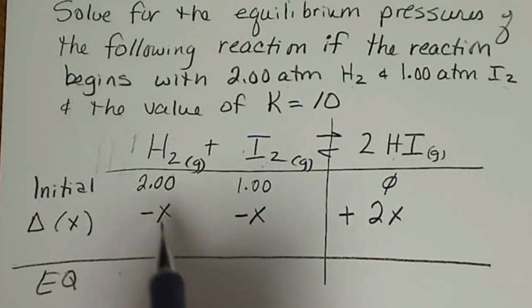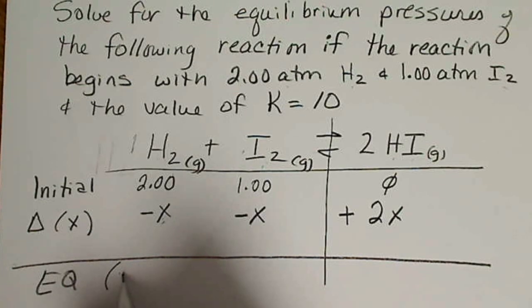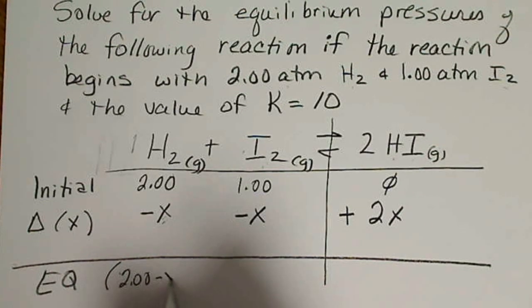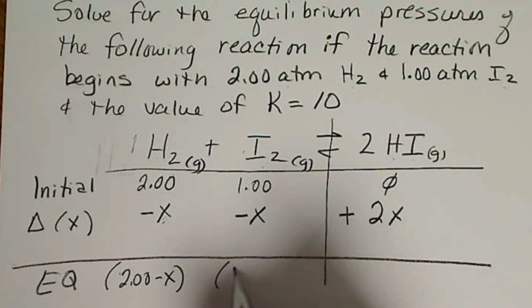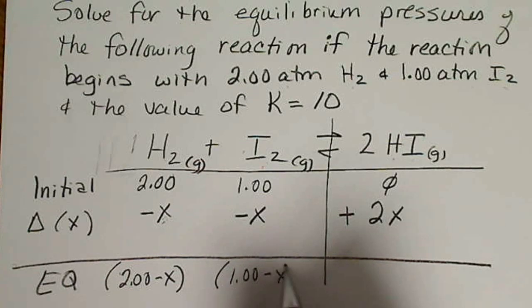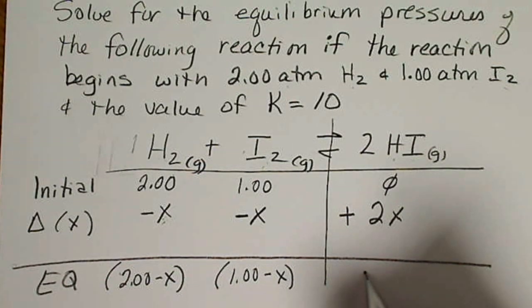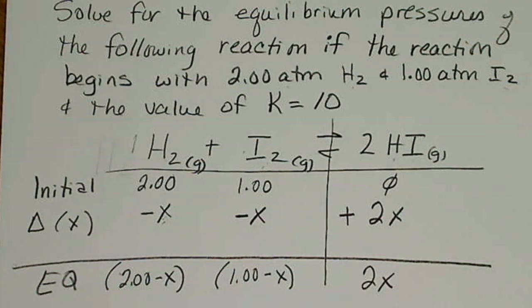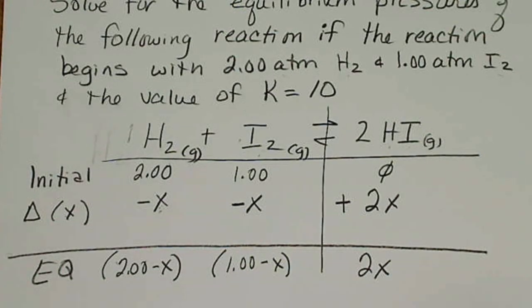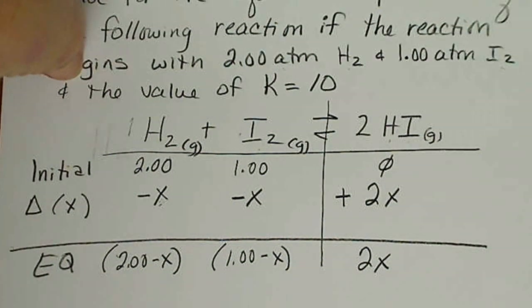So at equilibrium, whatever this change is, which we'll be solving for, our hydrogen is going to be 2.0 minus X. Iodine will be 1 minus X, and our HI is going to be 2X. So these are the values that we're going to plug into the equilibrium expression.